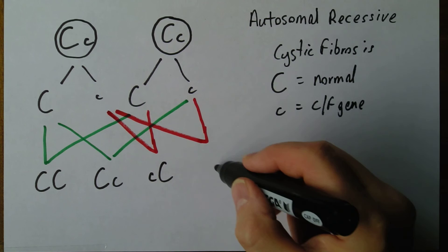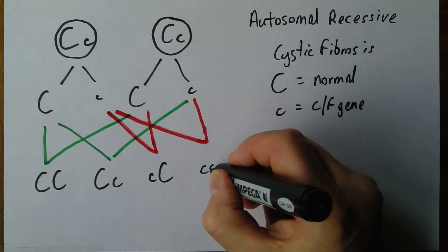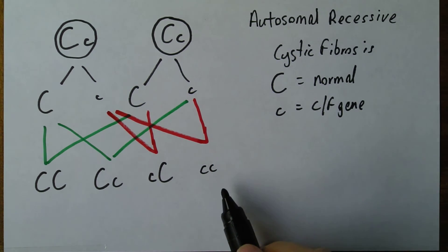But here we have the two small c's. This means the person has two copies of the recessive cystic fibrosis gene. There is no normal dominant gene present so they won't be normal.